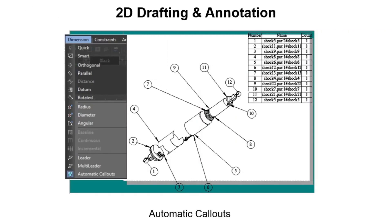TurboCAD 2023 introduces a new tool called Automatic Callouts. This tool enables users to intelligently add callout dimensions to their drawings with just a few clicks. Callouts can be arranged in a circular formation or along a polyline. Additionally, a bill of materials table can optionally be created containing the callouts.